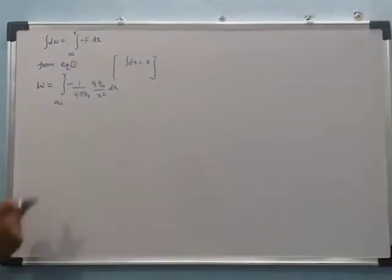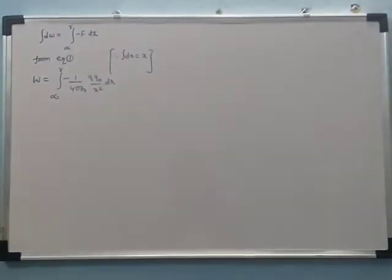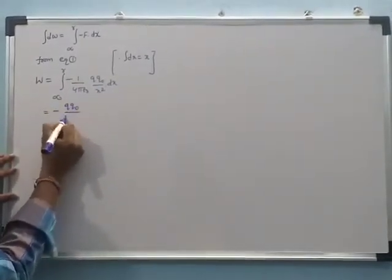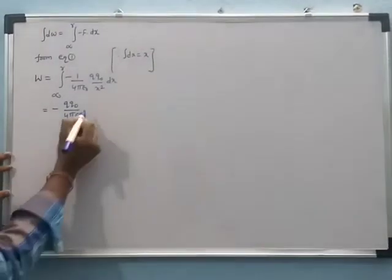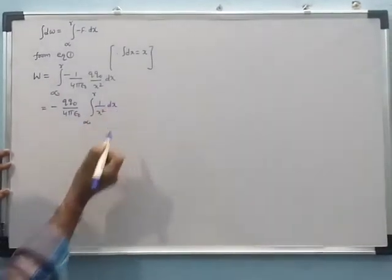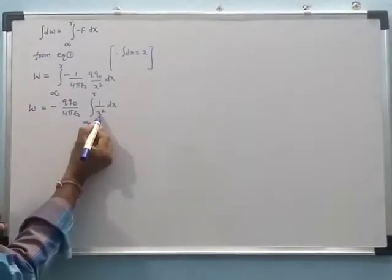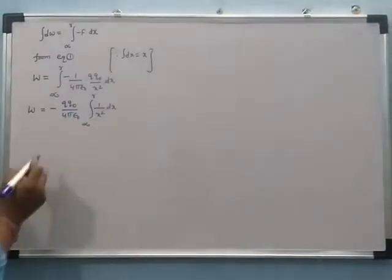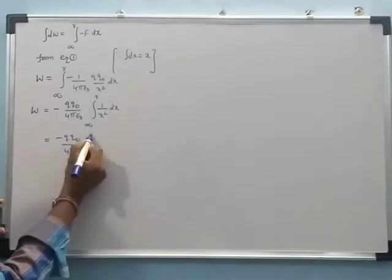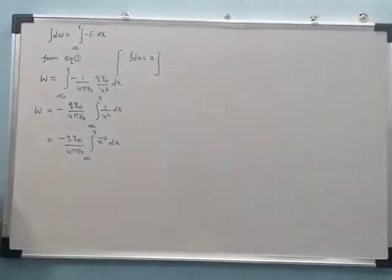In this integration, the constant values before the integral — the charges qq₀ and 4πε₀ — are constants, so we take them out. We write: minus (qq₀)/(4πε₀) times the integration from infinity to r of (1/x²) dx, which we rewrite as x^(−2) dx.